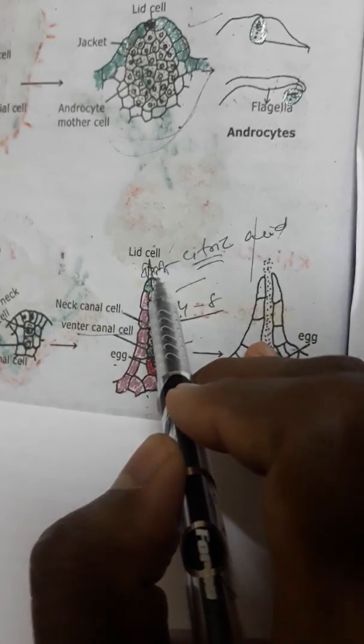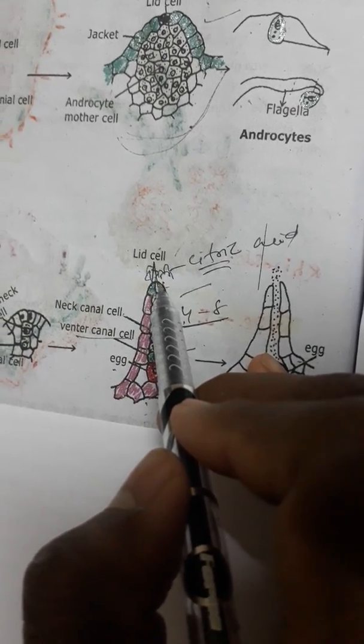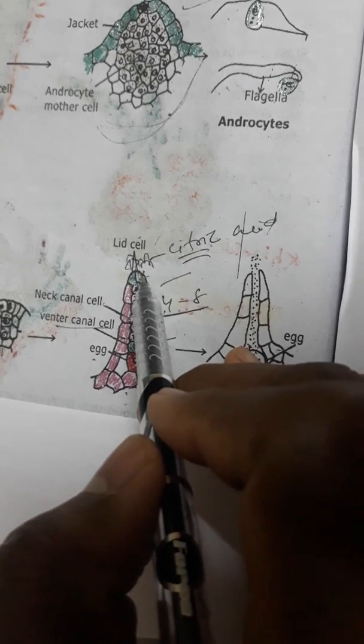The citric acid attracts the androcyte. The androcytes are attracted to this chemical. This movement is called chemotactic movement. When the androcyte moves forward towards the archegonium,